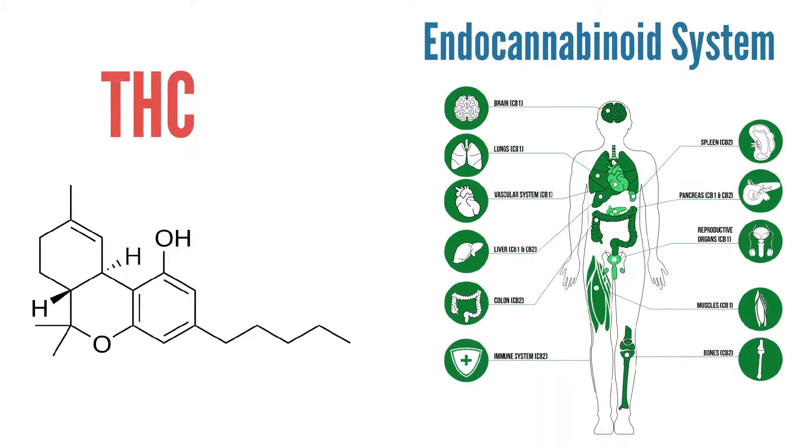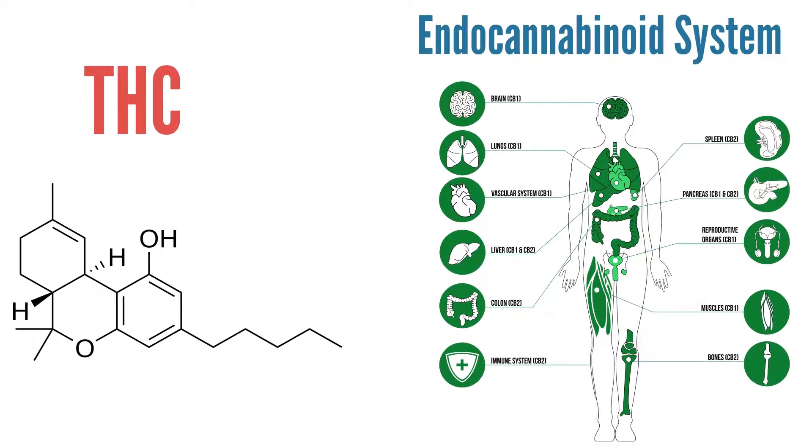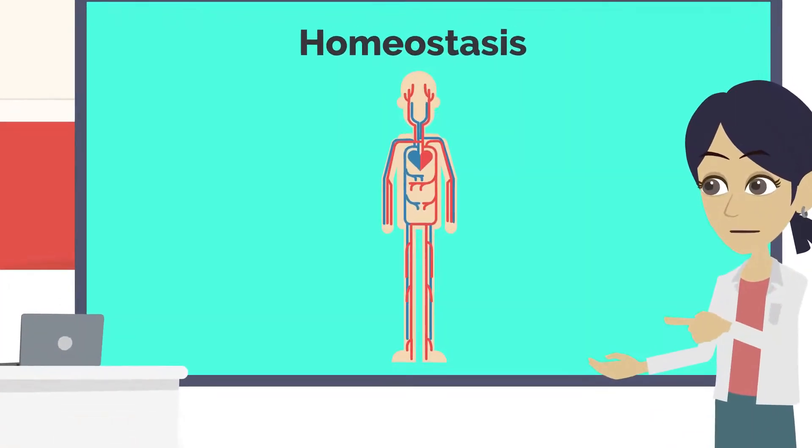THC works by binding to receptors in our endocannabinoid system, which is responsible for promoting homeostasis within our body.